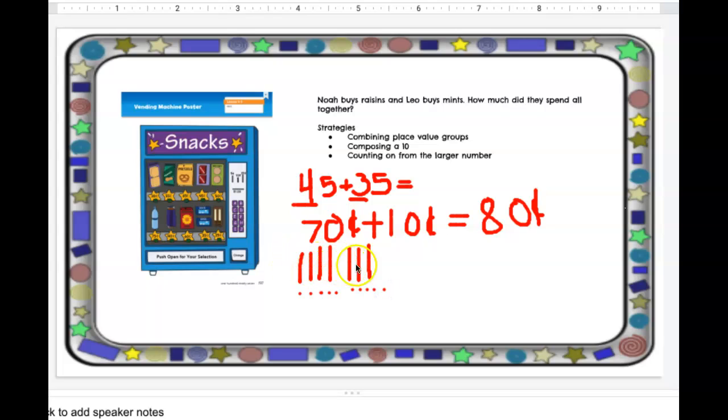And then I see that I have seven longs and 10 cubes. And of course, my 10 cubes need to be traded for a long. So that leaves me with eight longs. And each long is worth 10. 10, 20, 30, 40, 50, 60, 70, 80. Eighty cents.